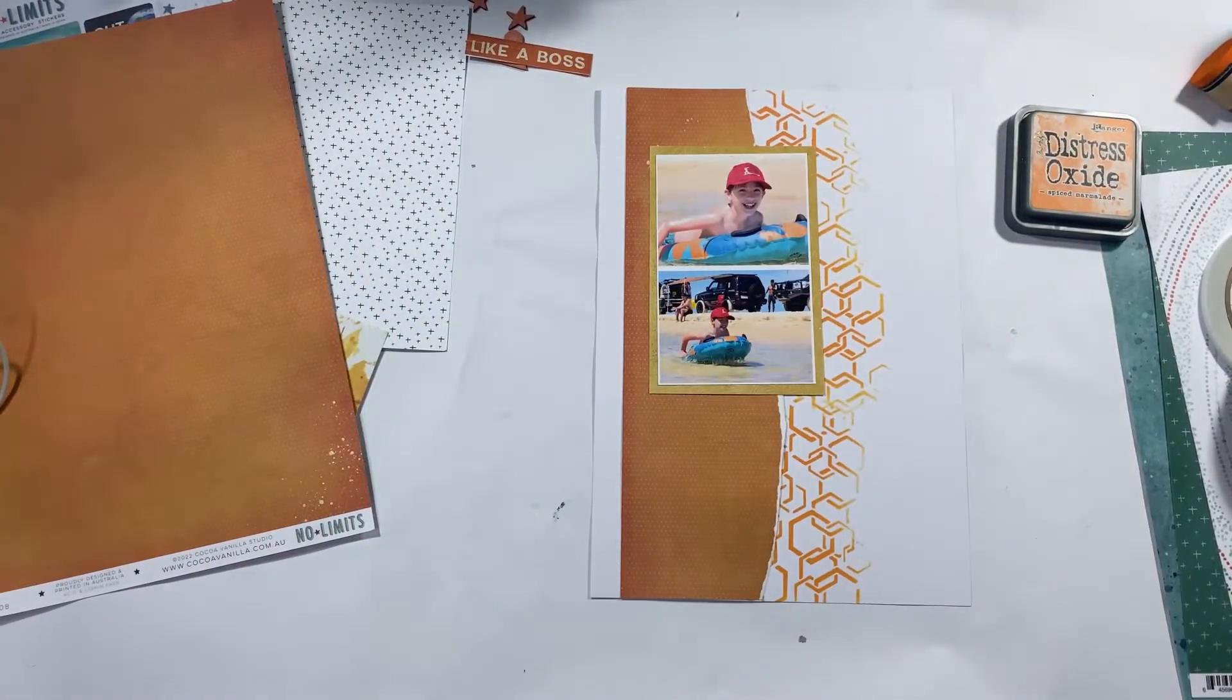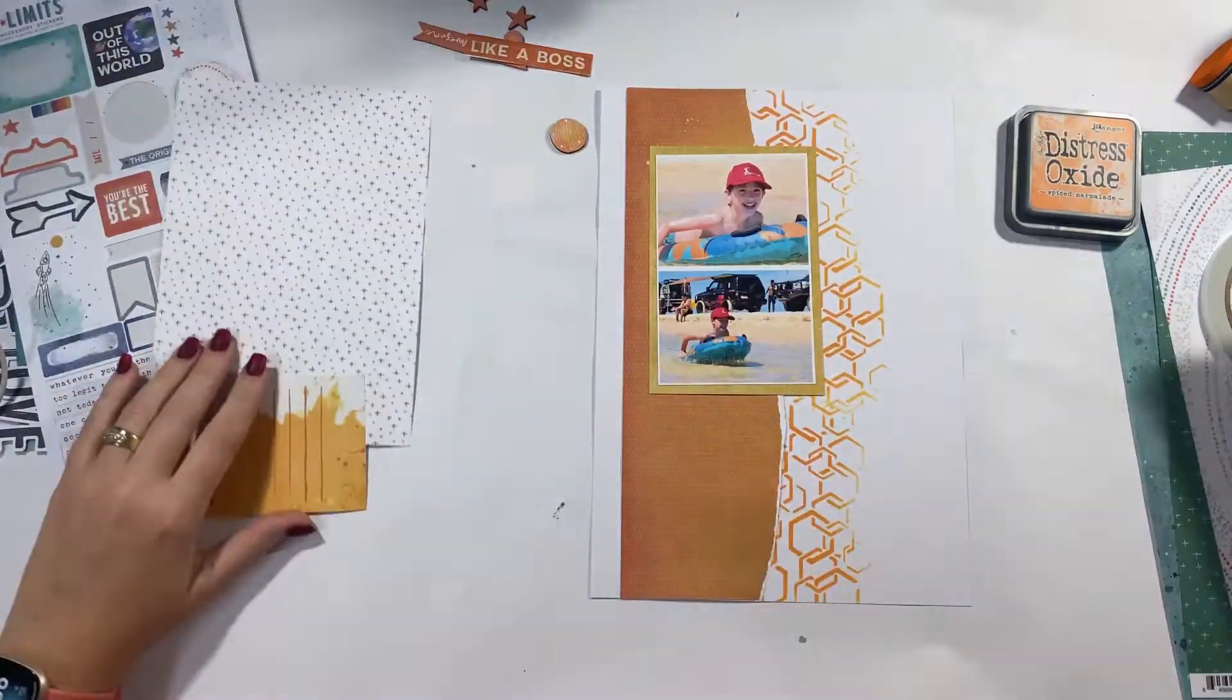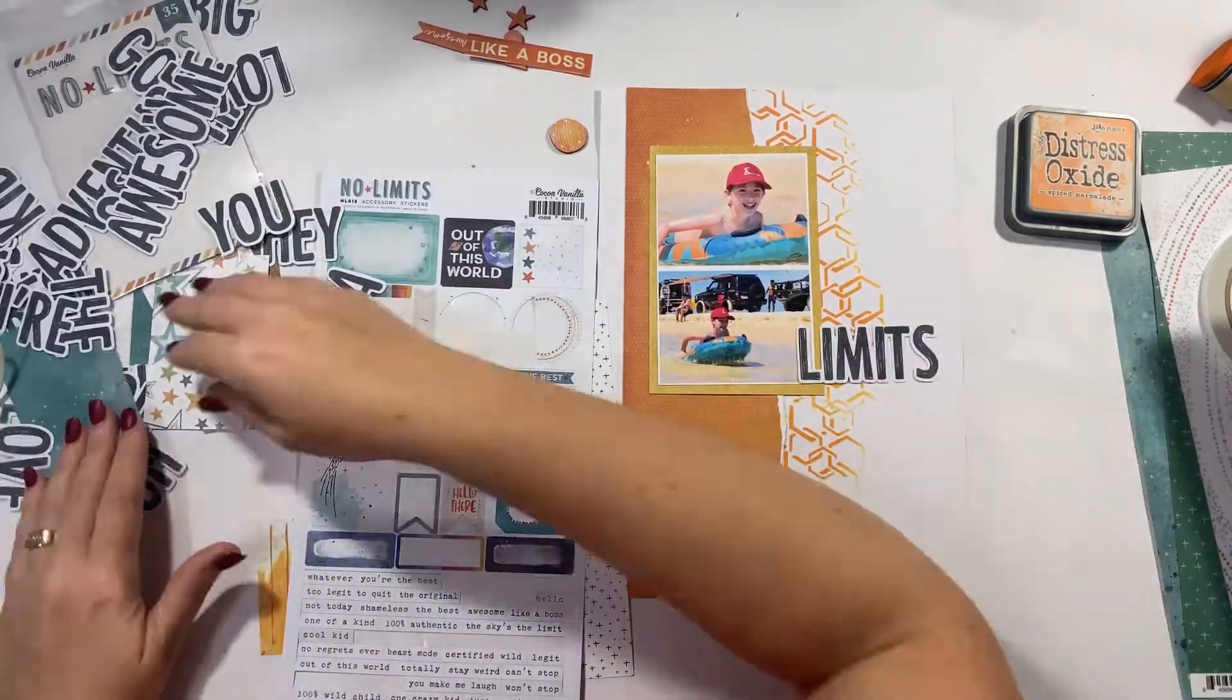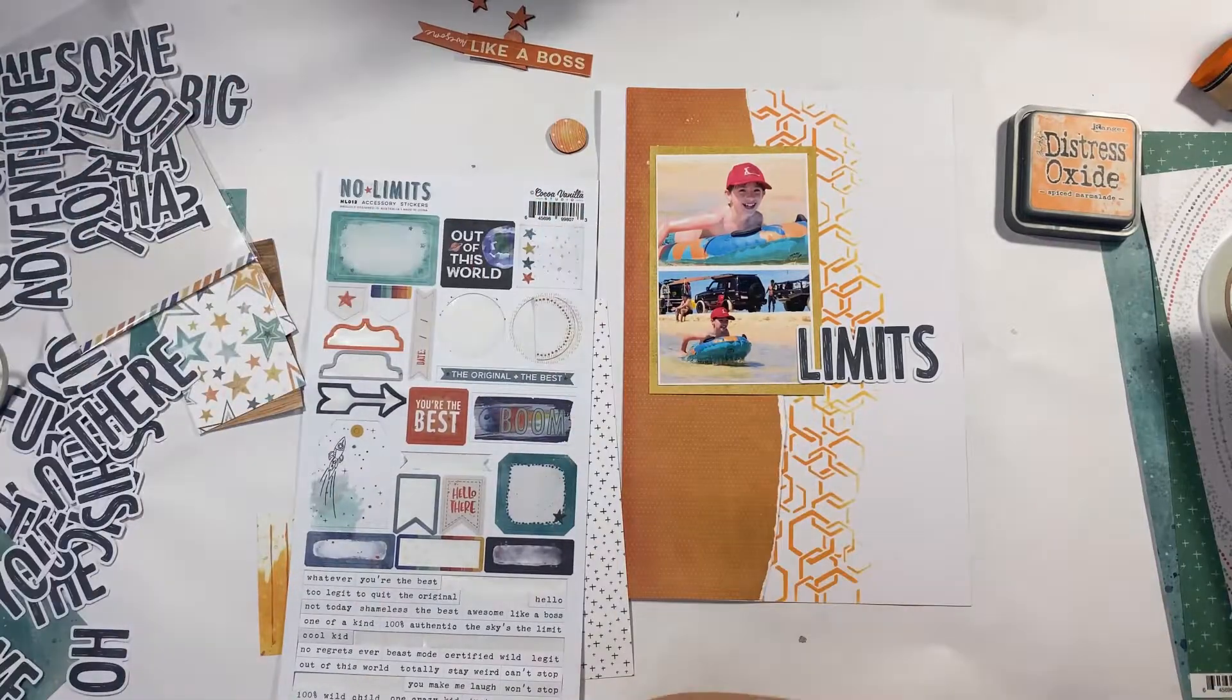So I've torn the piece of cardstock, I've mounted my photos onto a different variant of the orange, and that's the thing when you're creating with a color like I am today, you don't necessarily have to use all the same tone.